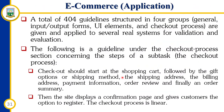For e-commerce, researchers like Gehrke and Turban collected and formulated detailed HCI guidelines for e-commerce applications. They proposed a total of 404 guidelines organized in four groups: general, input/output forms, user elements, and checkout processes. These guidelines were applied to several real systems for validation and evaluation. The guidelines under the checkout process specify that checkout should start at a shopping cart, followed by gift options or shipping method, shipping address, billing address, payment information, and order review.